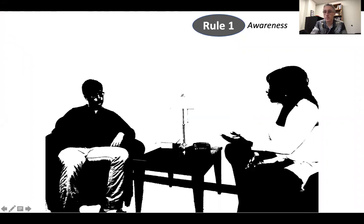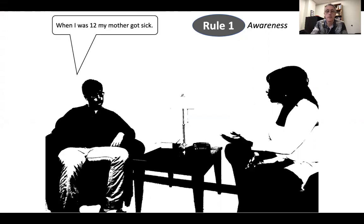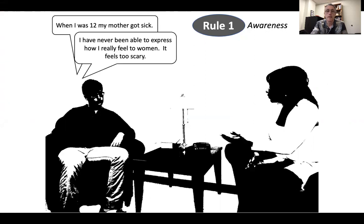Rule one is really about awareness. Imagine you're the therapist working with this particular client, and the client is talking about some childhood experiences. He says, when I was 12, my mother got sick. And then he says, I've never been able to express how I really feel to women — it feels too scary. The client is just talking about stuff going on in their daily lives, and as you're having this talk with the client, you are doing rule one, which is observing CRBs — looking for CRBs.